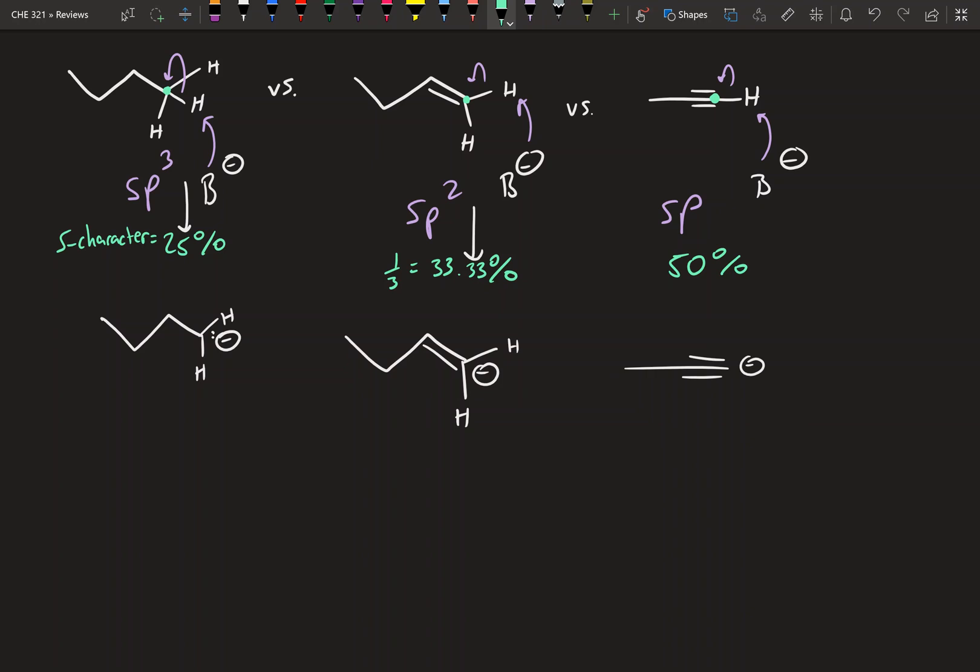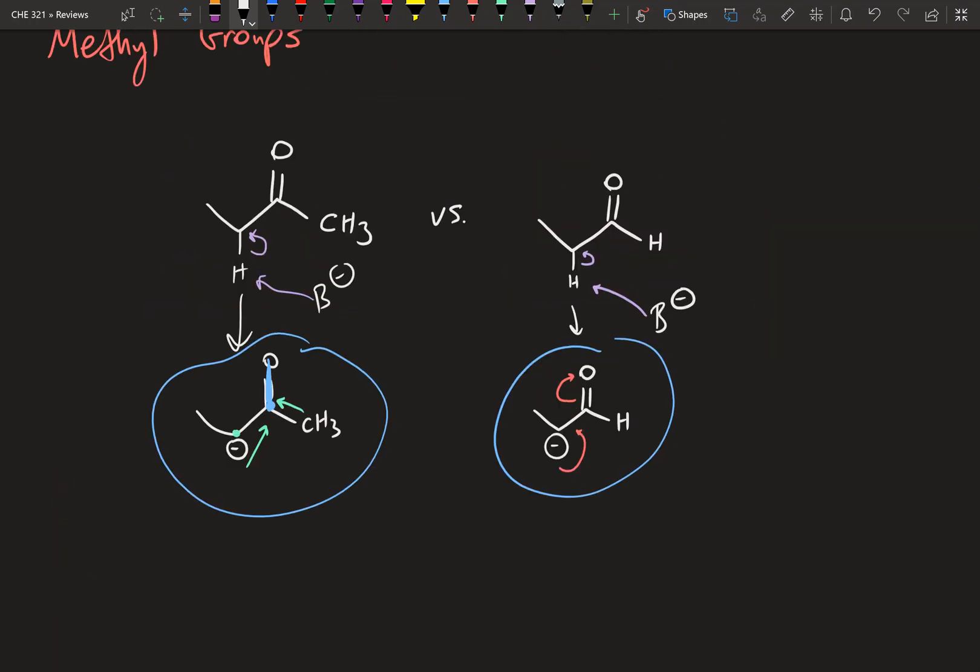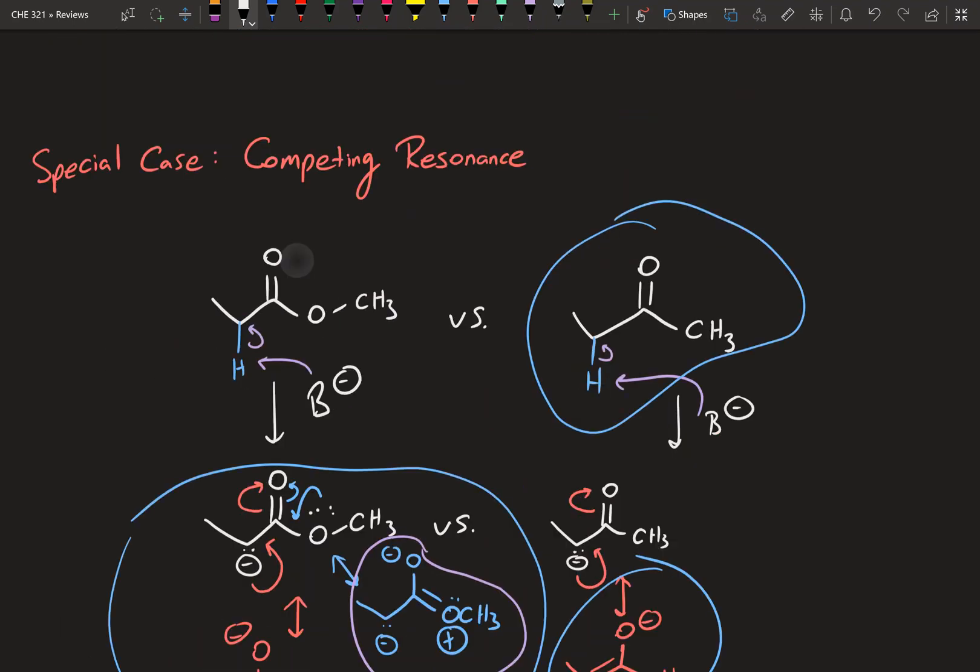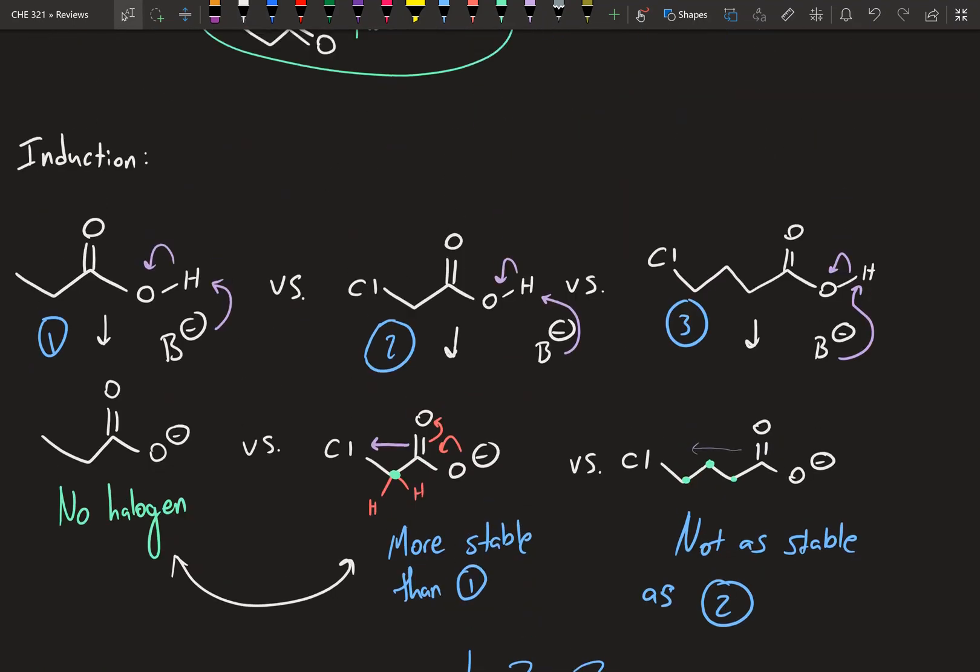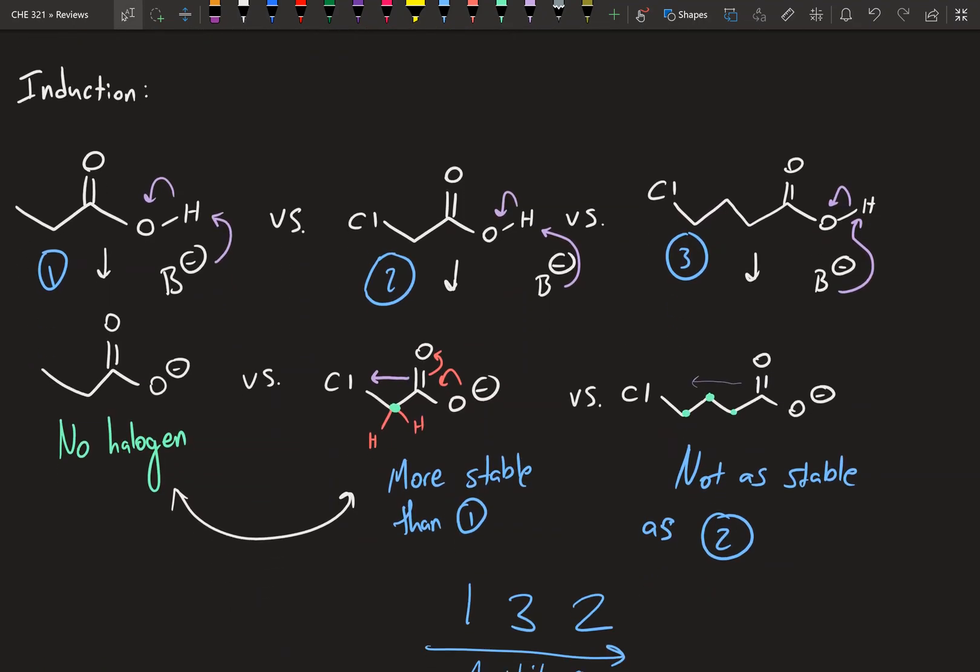Just to summarize, sp due to more s character will be more acidic than the other two, and sp2 will be more acidic than sp3. That's it for REO, but I'm just going to mention one quick thing that I forgot in the last video about induction. We showed these three examples over here. I'm just going to clean this up a little bit.